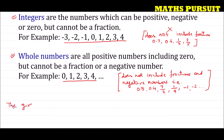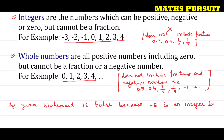The given statement is false because, for example, minus 5 is an integer but it is not a whole number. Every integer cannot be a whole number because negative integers like minus 5 are integers but not whole numbers. Therefore, our conclusion is that the given statement is false.